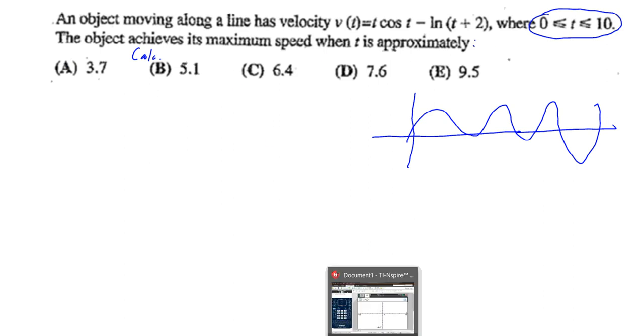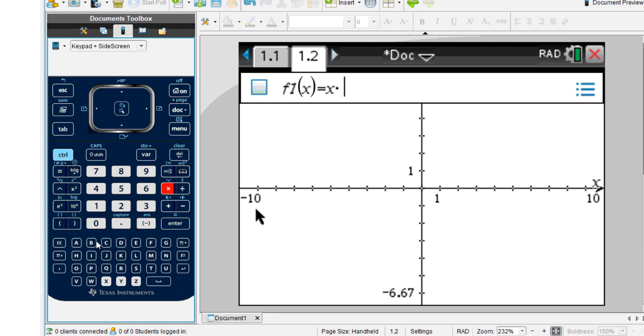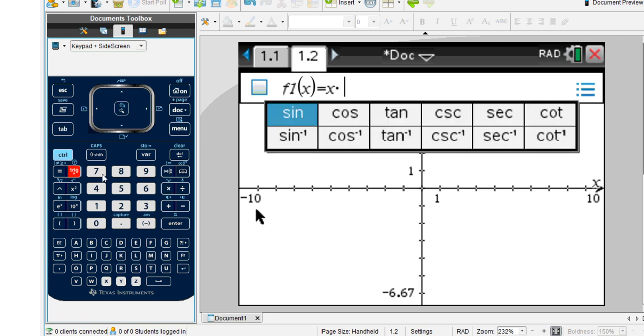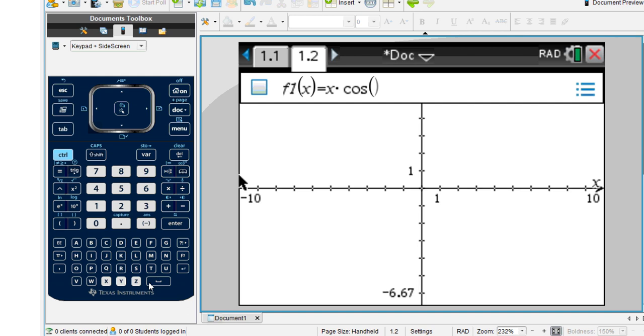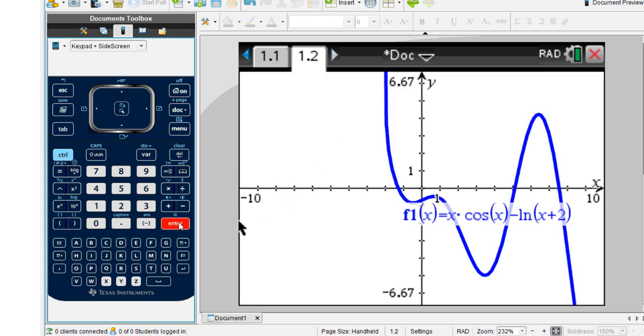Now we can just go to our calculator. We go here and put in x times cosine x. One thing that is crucial to notice is that we are in radians, this mode here, minus the natural logarithm of (x+2). So we used x instead of t, and we are interested between 0 and 10.